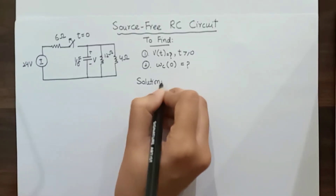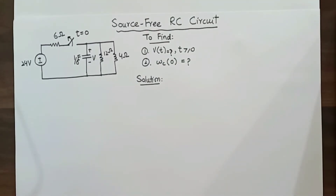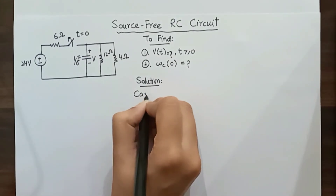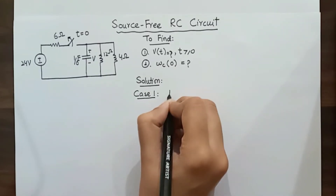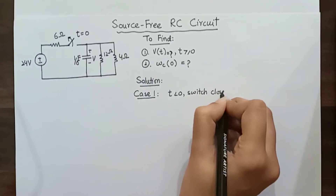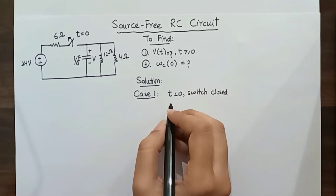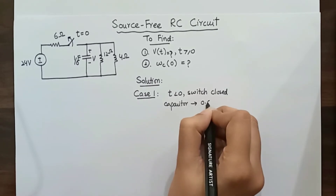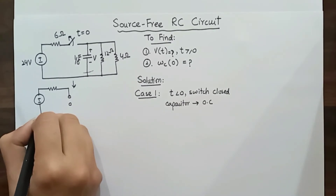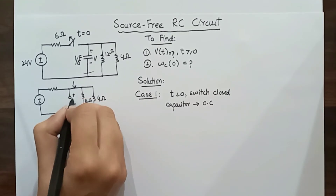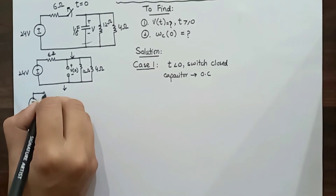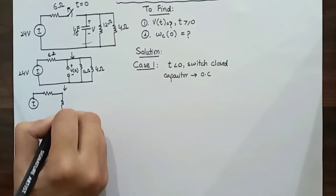We have two cases: when t is less than zero and when t is greater than zero. For Case 1, when t is less than zero, the switch is closed. The capacitor gets charged by the 24-volt source and acts like an open circuit to DC, not allowing any current to flow. Let's redraw the circuit with the capacitor open-circuited and the switch closed, then simplify by removing the open-circuited capacitor branch.